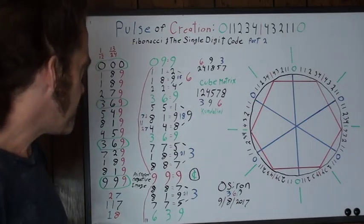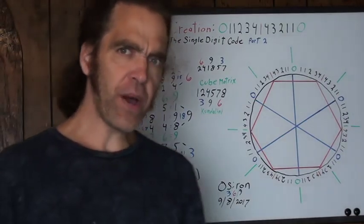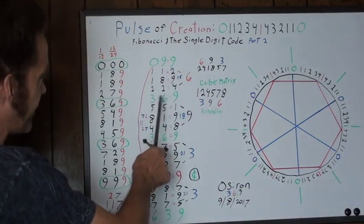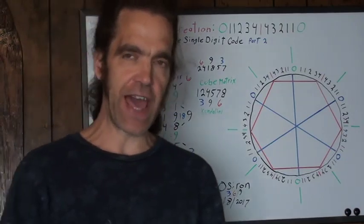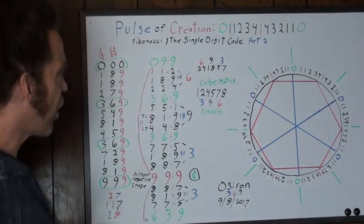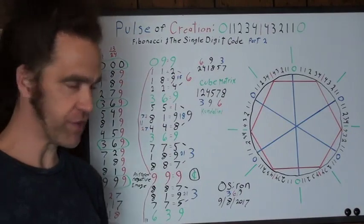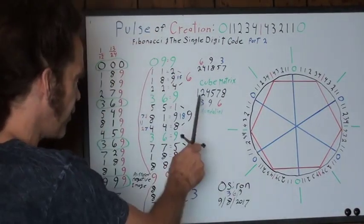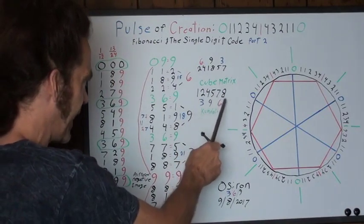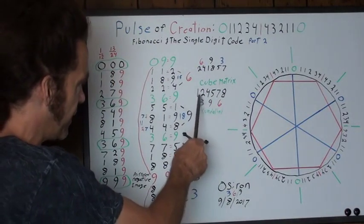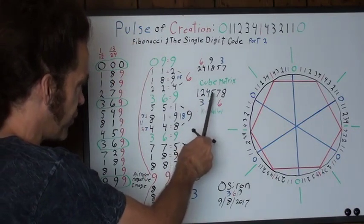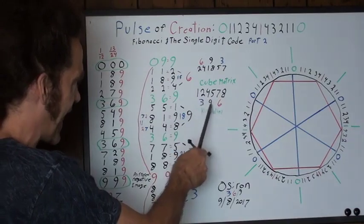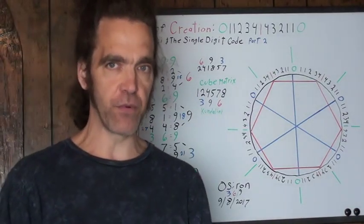But it also does more than that. All the numbers, you'll notice that the numbers do some amazing things. If you recall from the octahedron Kundalini grid video, the cube matrix, the actual numbers that form the cube itself, are 1, 2, 4, 5, 7, and 8. Well, those numbers separate. If you join the first two, the second two, and the third two together, that reveals itself as 3, 9, and 6, complete with vortex math separation.